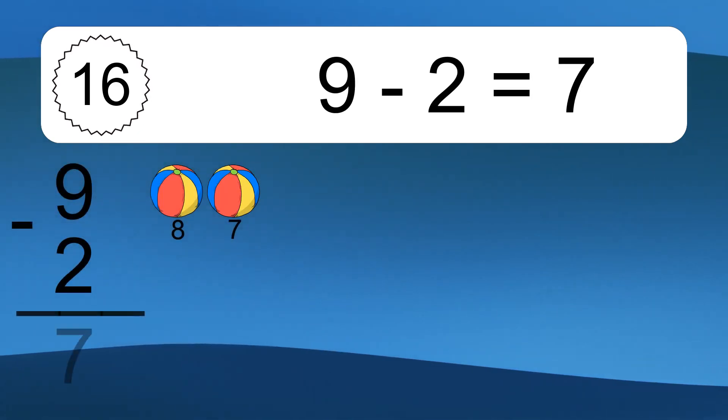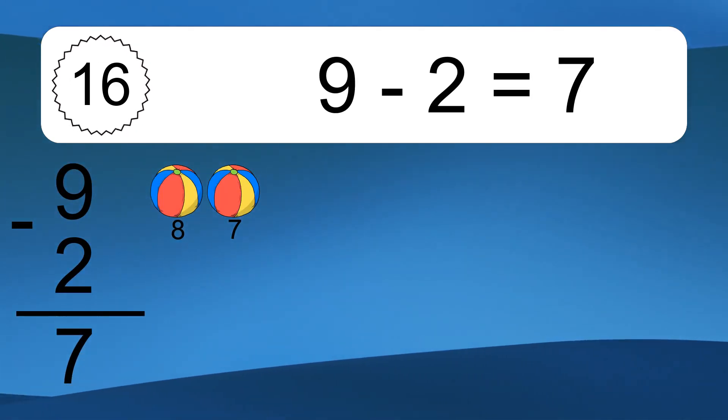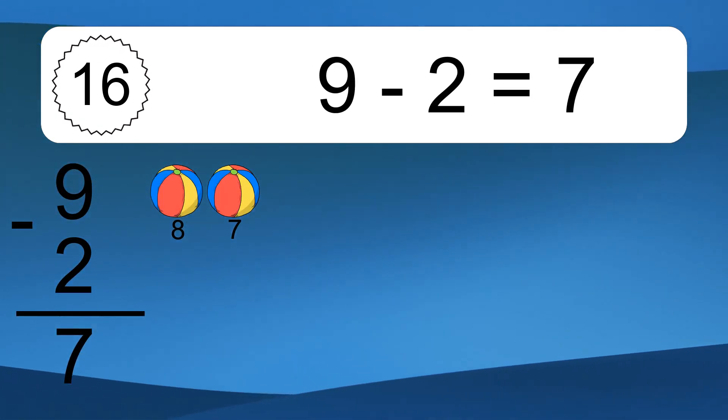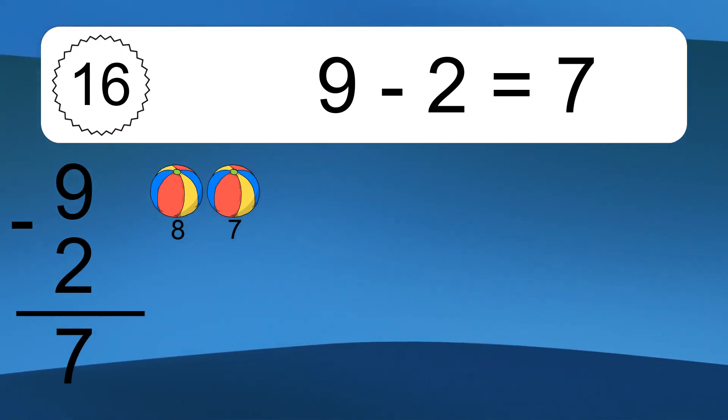9 minus 2 equals what? 9 minus 2 equals 7. Let's count it: 8, 7.